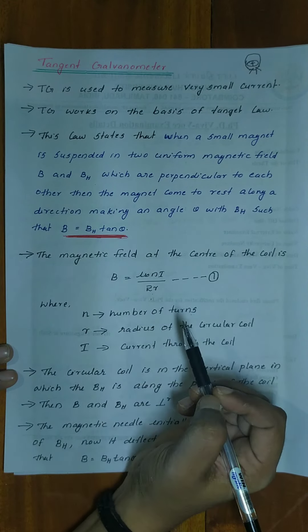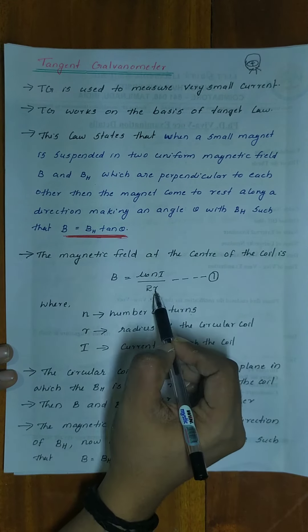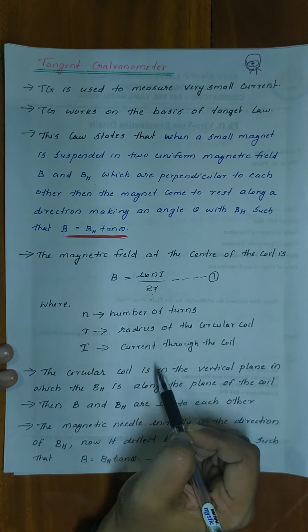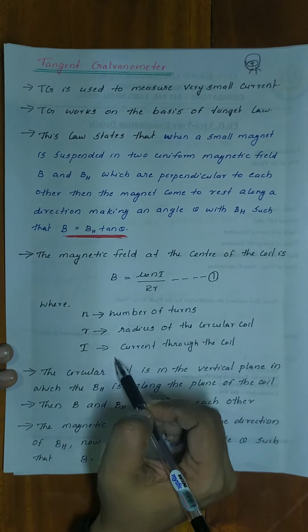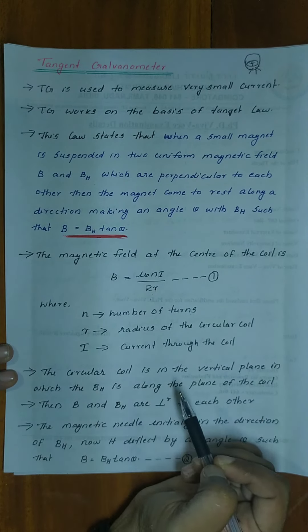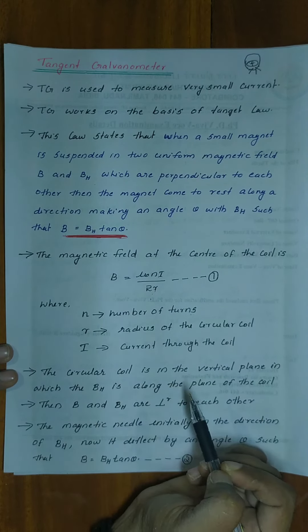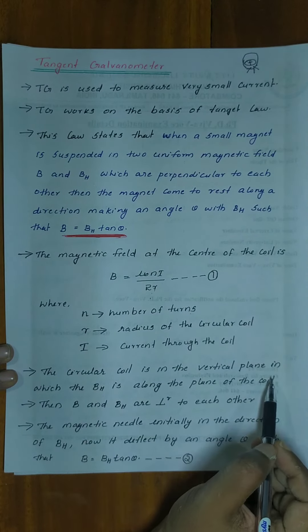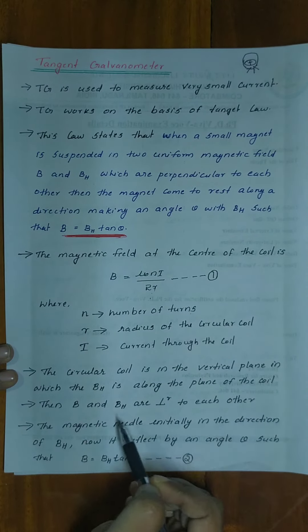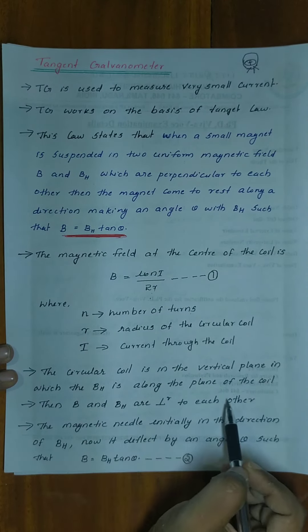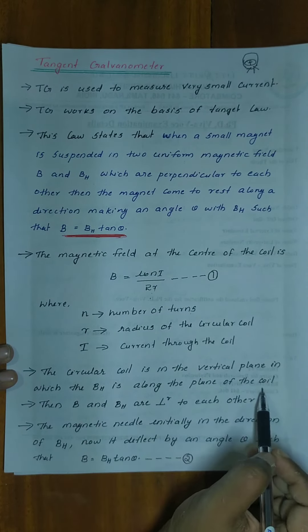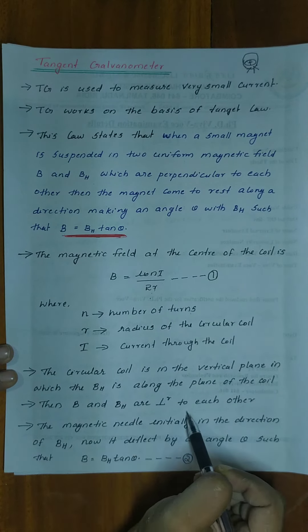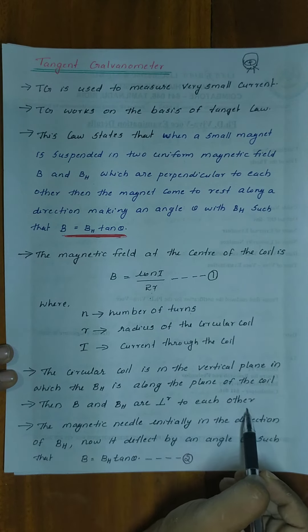The circular coil is in the vertical plane in which BH is along the plane of the coil. Then B and BH are perpendicular to each other.